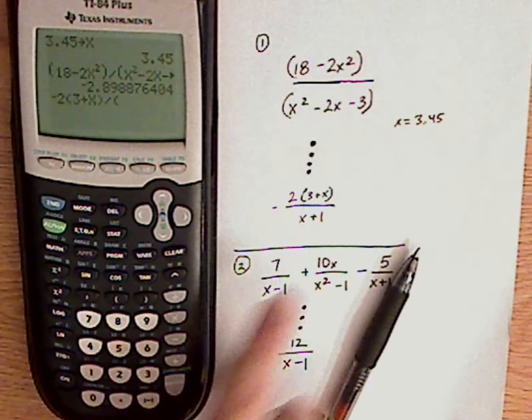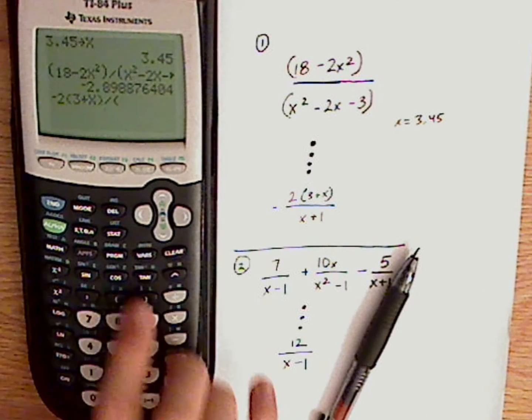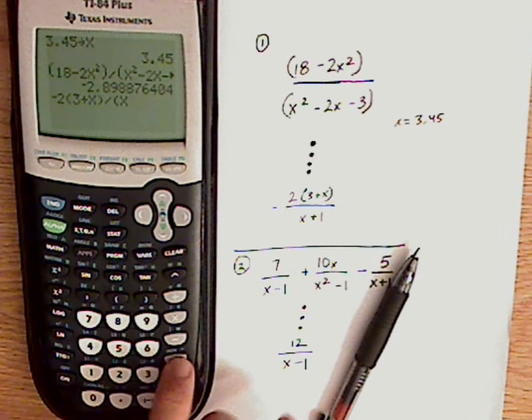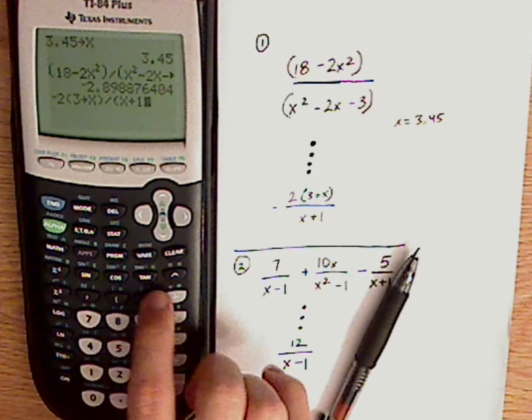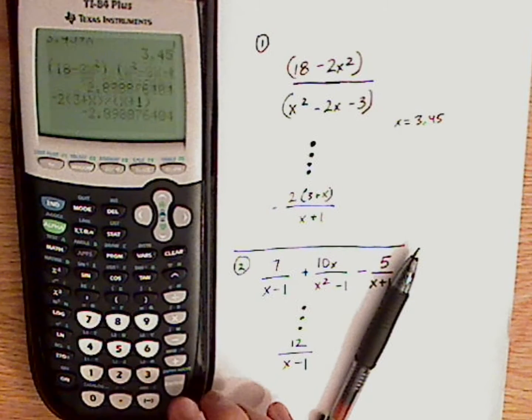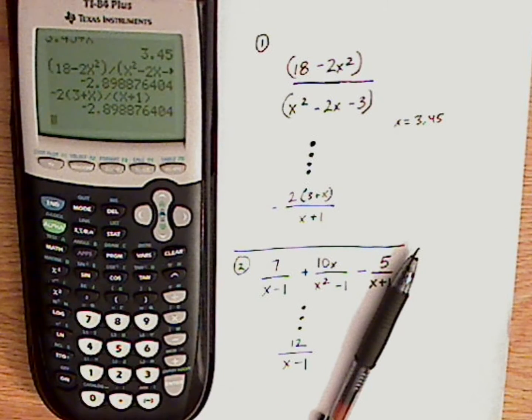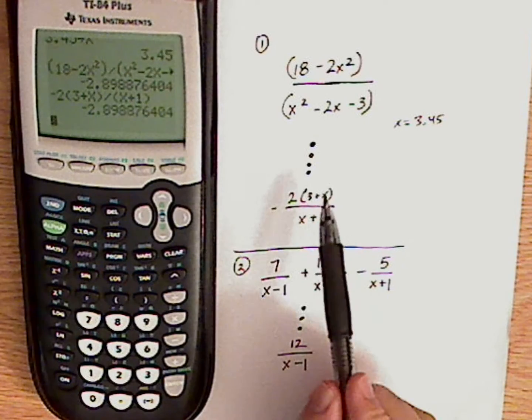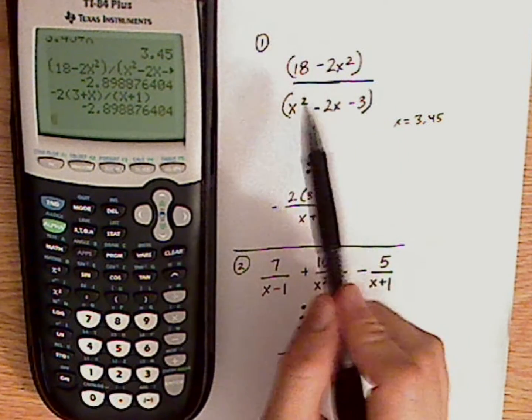And then everything in the denominator does need parentheses. So it's parentheses x plus 1, closed parentheses. And see that? I got the same exact thing. So that means that this is equal to this.